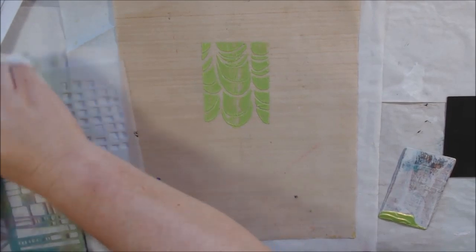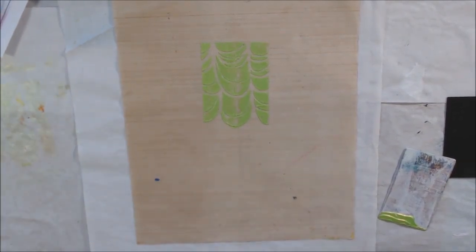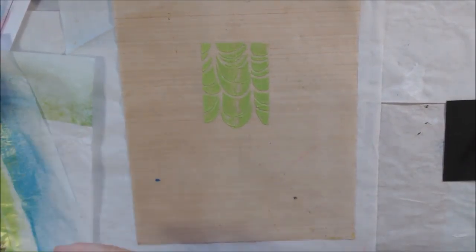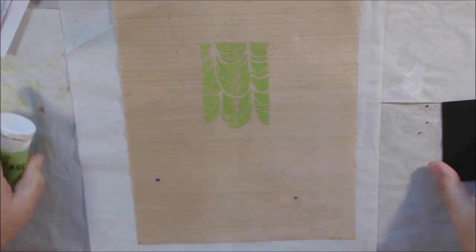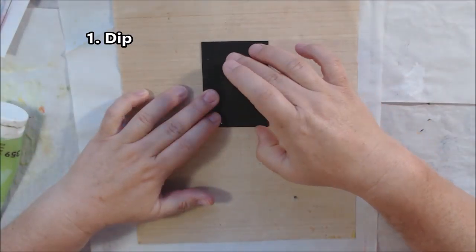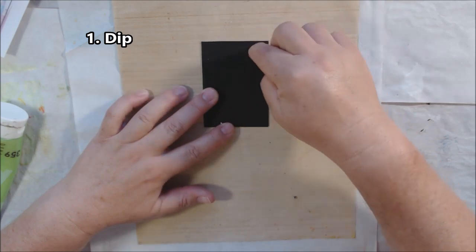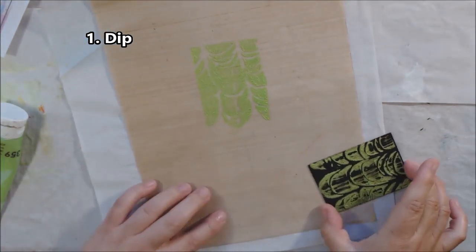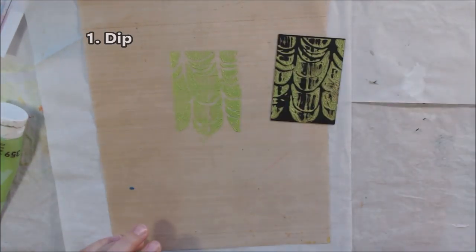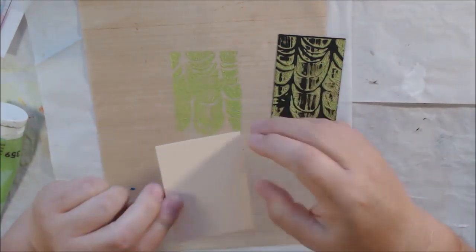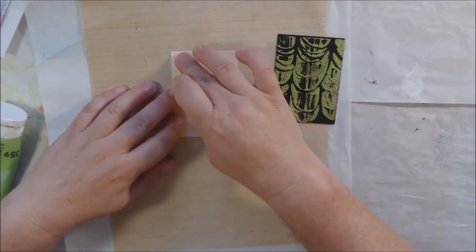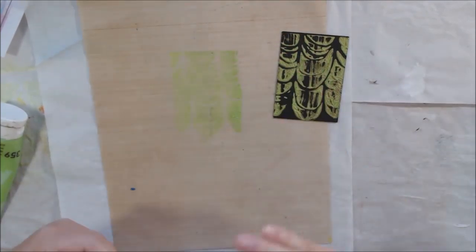That little printout you see is my challenge prompts, and I'm going to make some artist trading cards with it. Prompt number one for this month was dip. I thought about different ways I could dip something. I've got two other challenges out there that you can watch.